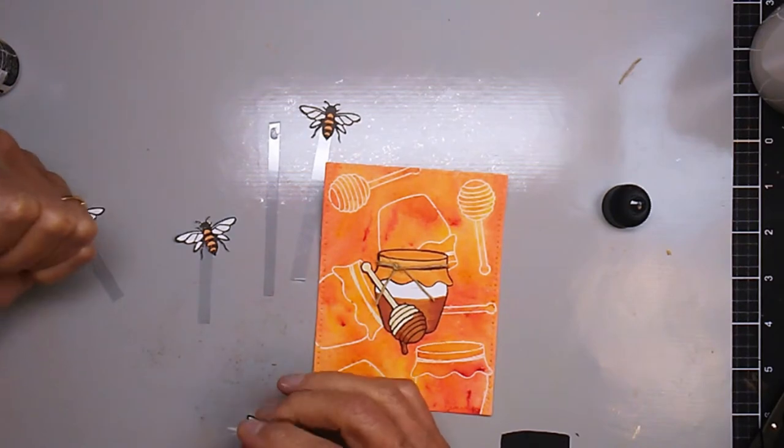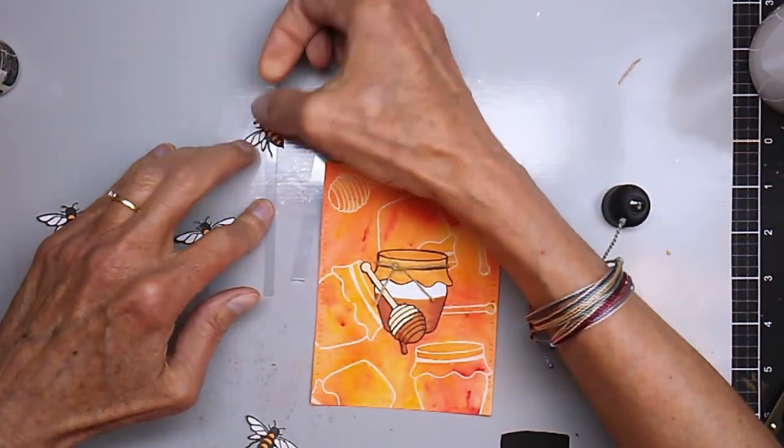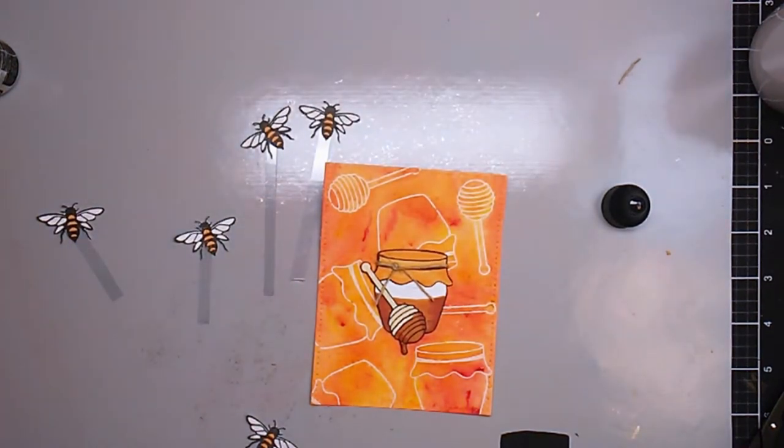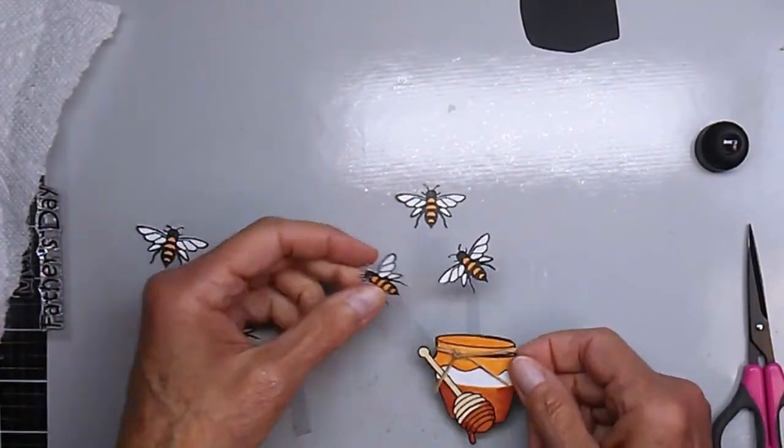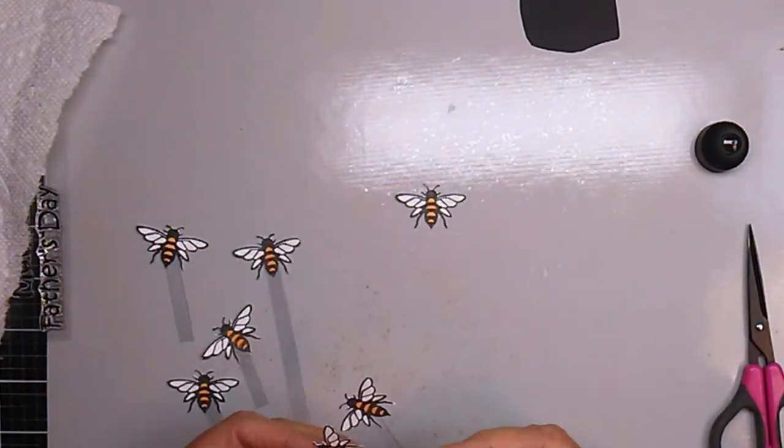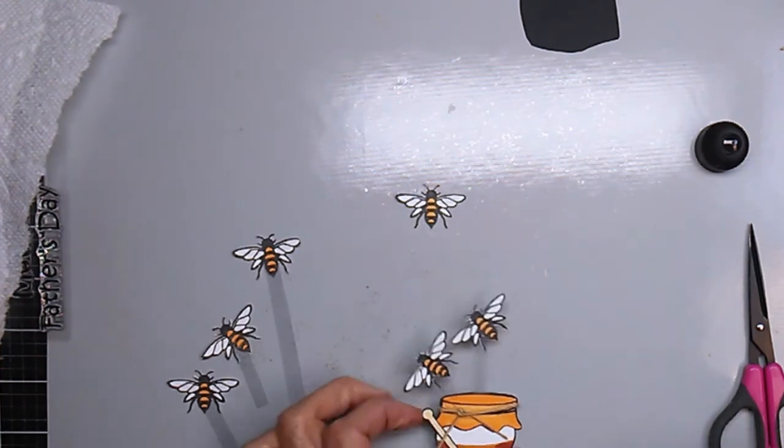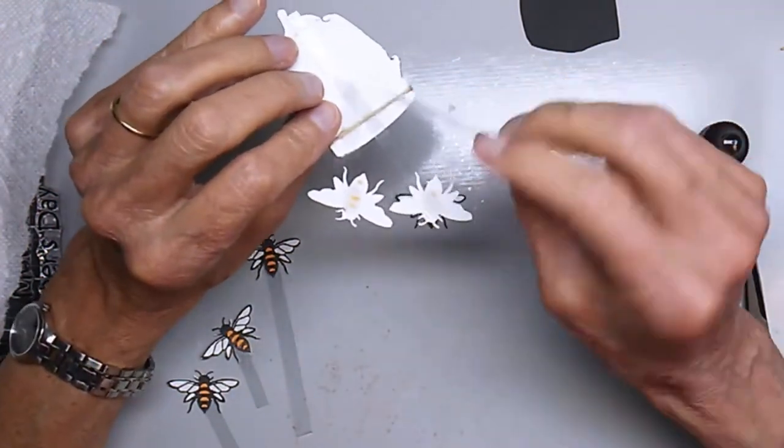Just adding the bees here and trying to make sure they go in different directions. The next thing I'm doing is attaching those acrylic strips to the back of the honey pot. I'm using a distress collage medium because I think it adheres well when doing this.